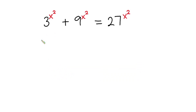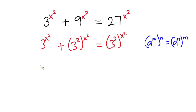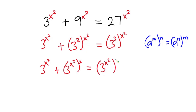This equation is the same as 3 to the power x squared plus 3 to the power 2, to the power x squared, and this is equal to 27 — which is 3 to the power 3 — the whole thing to the power x squared. From indices, if I have a to the power m to the power n, this is the same as a to the power n to the power m. So I can rewrite this as 3 to the power x squared plus 3 to the power x squared to the power 2, equal to 3 to the power x squared to the power 3.